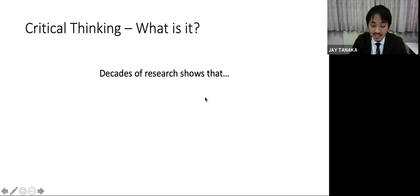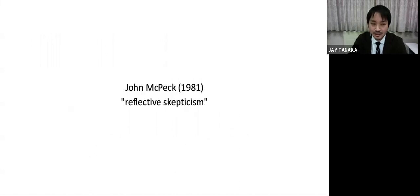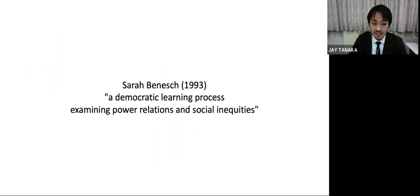Decades of research on critical thinking shows one thing: no one agrees what it is really. Everyone has a general sense of what it is maybe, but there is a great variety of perspectives on it. Let's just go through a few. John McPeck: critical thinking is relative skepticism. Robert Ennis: critical thinking is reasonable reflective thinking focused on deciding what to believe or do. Another definition frames critical thinking as a democratic learning process examining power relations and social inequities. From just those three examples, there's a variety of ways of conceptualizing critical thinking.